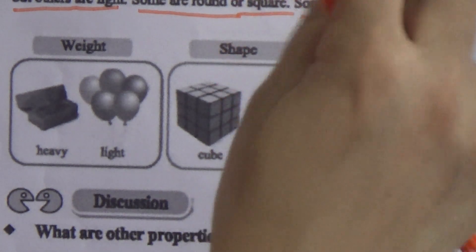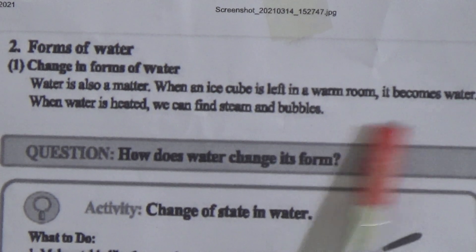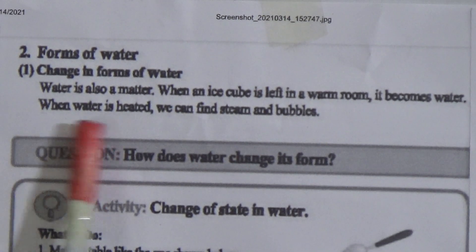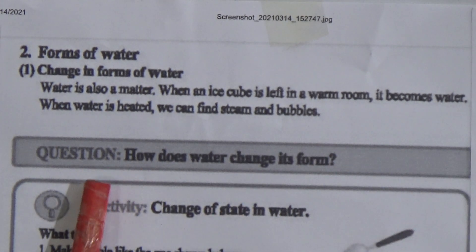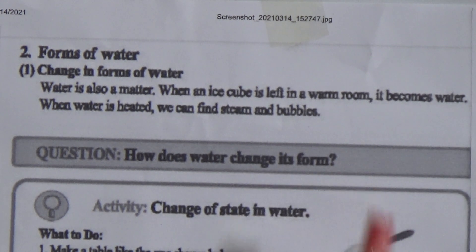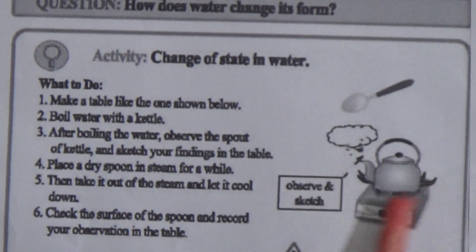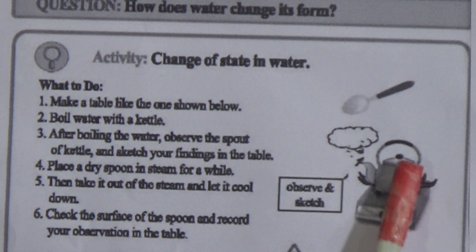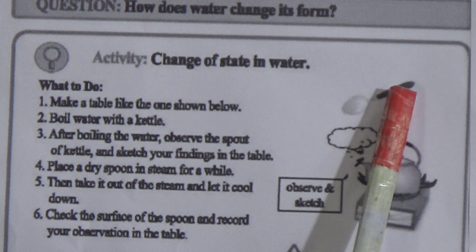Now come to the next page: Forms of Water. Water is also a matter. When an ice cube is left in a warm room it becomes water. When water is heated we can find steam and bubbles. Question: how does water change its form? See this figure — water is being heated, this is the steam and it is visible.